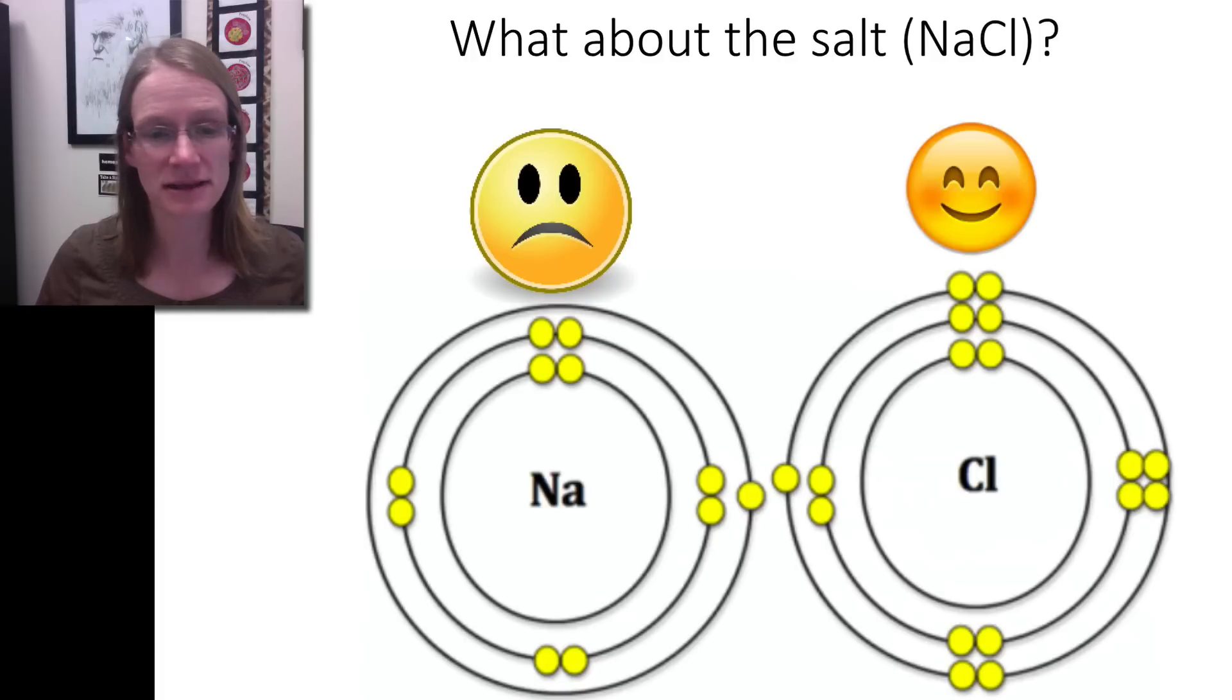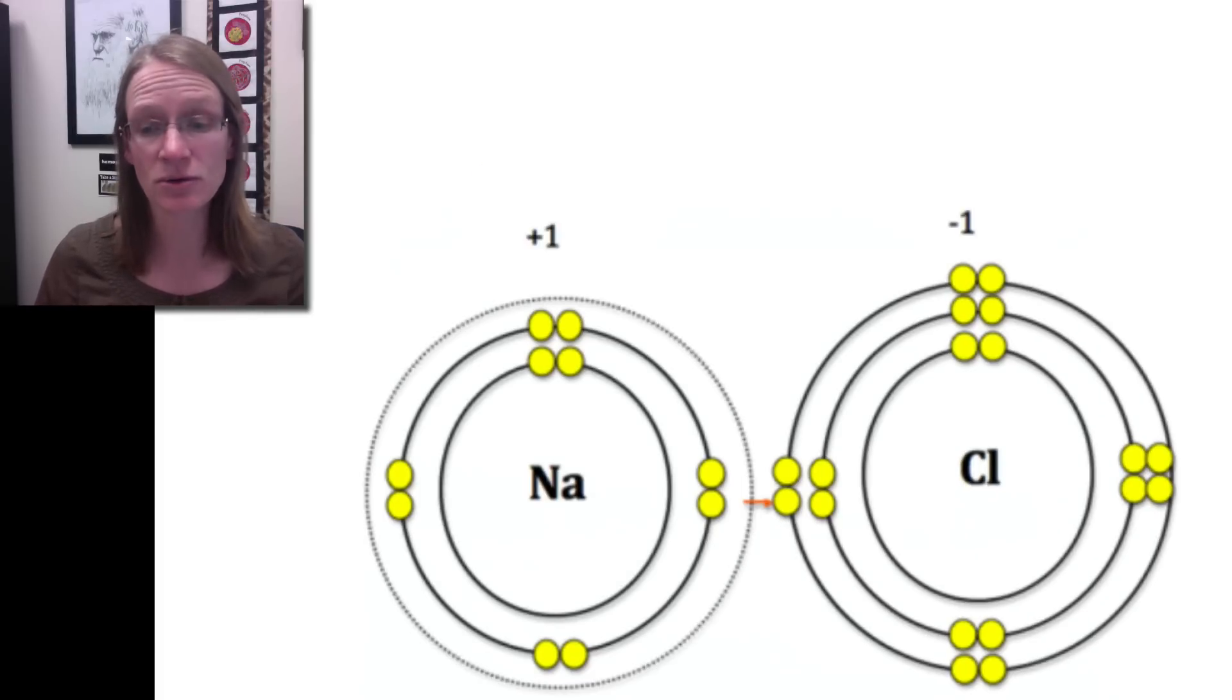But instead the better thing for them to do is to simply exchange and have that sodium donate that electron to chlorine. And if they do that then of course this guy is now totally full. It's perfectly happy. And this one actually also has these full valence shells because it now doesn't have that extra one in terms of the outer one in sodium.